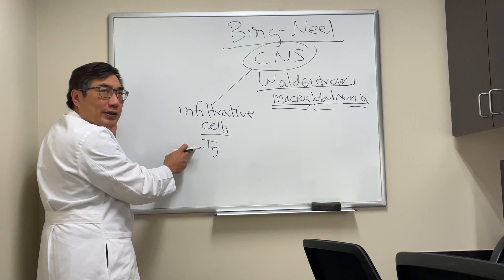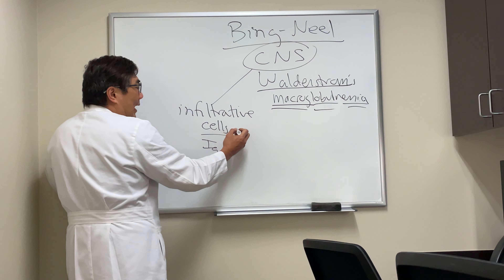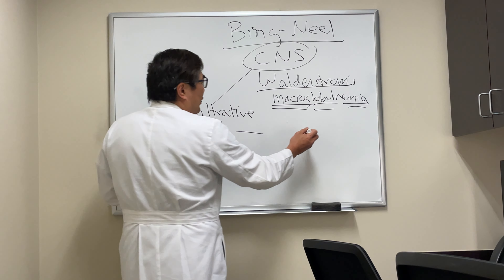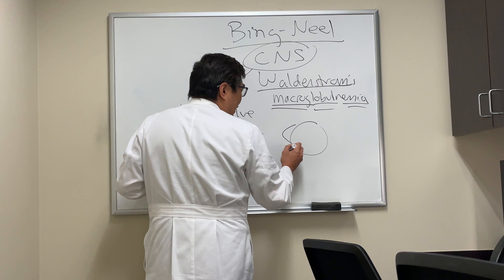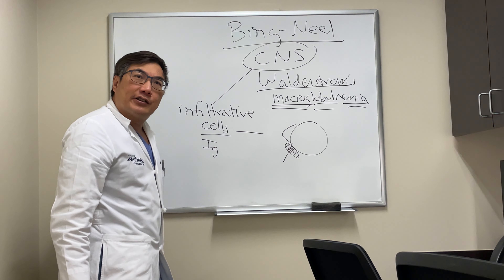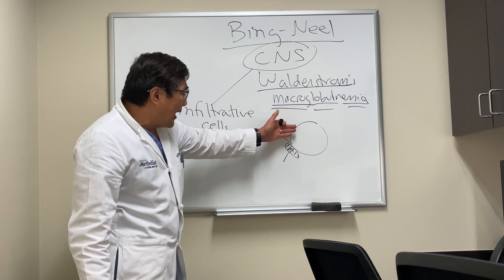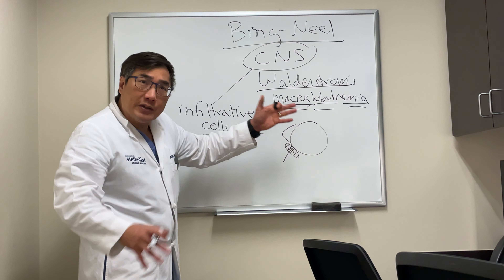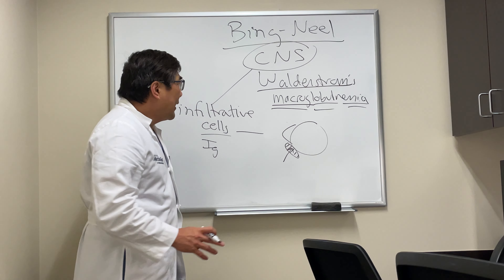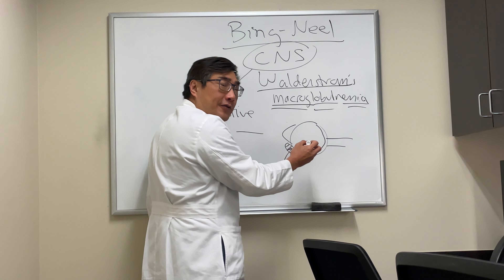Deposits of either the cells or the immunoglobulin can gum up the works, and that means it can appear in any part of the eye. We have anterior segment manifestations where the lesion appears under the conjunctiva or in the eye, mimicking iritis or vitreitis, with cellular debris and vitreous cell. It can also be in the choroid, the retina, or in the optic nerve.